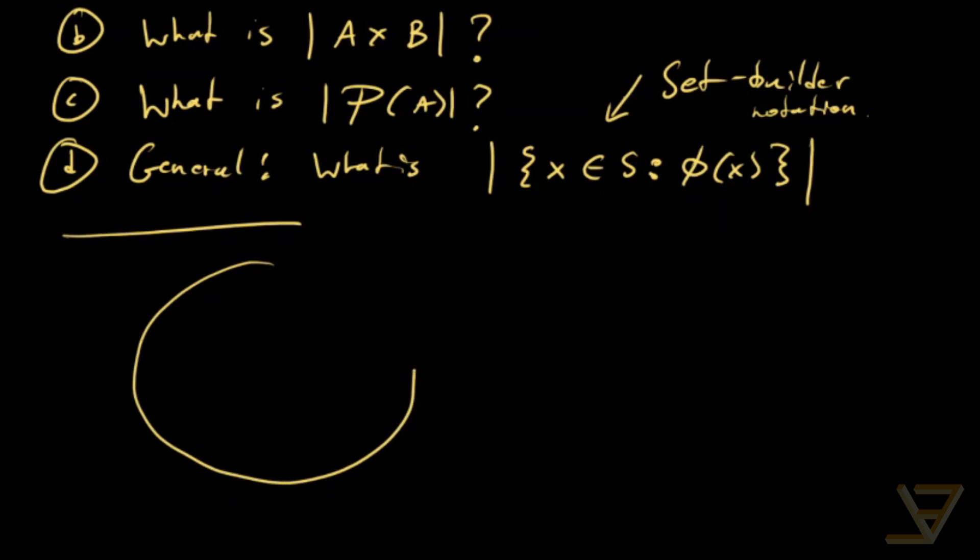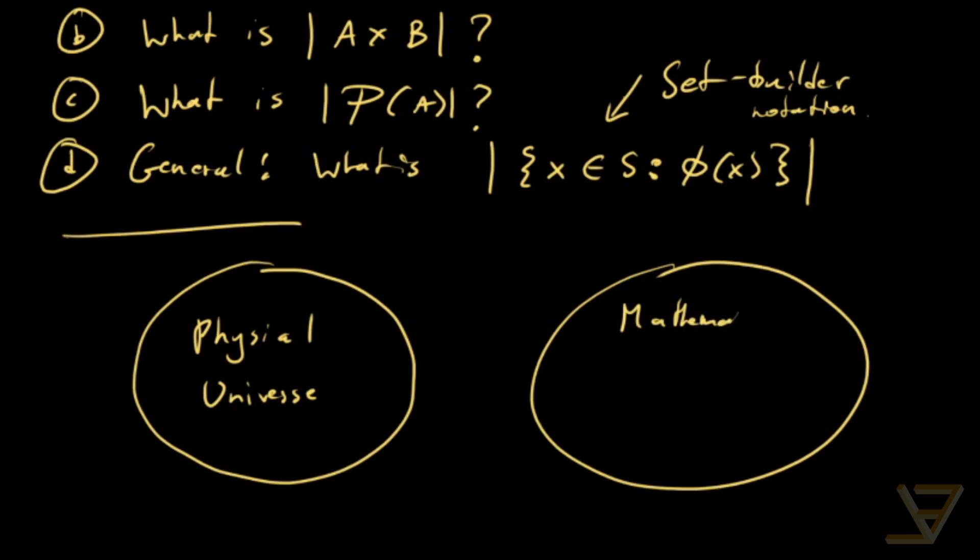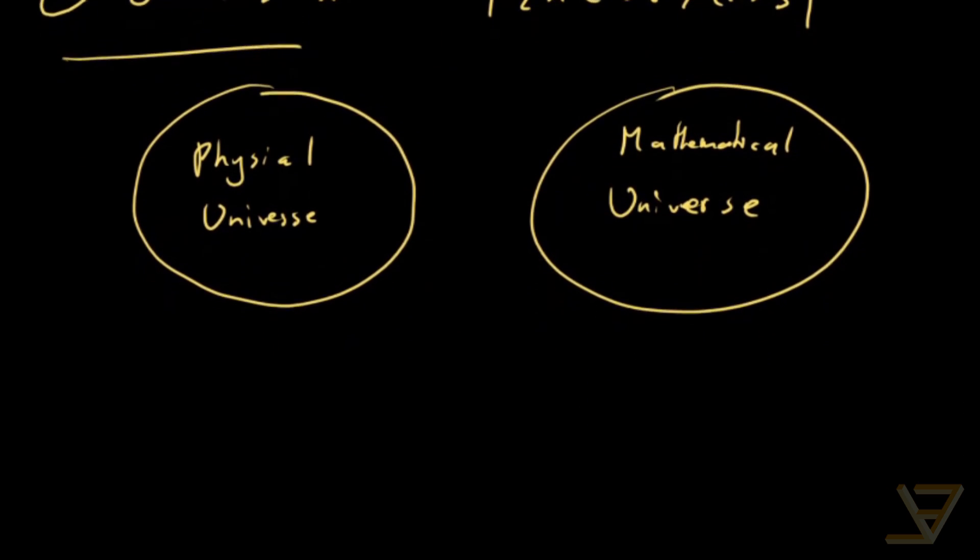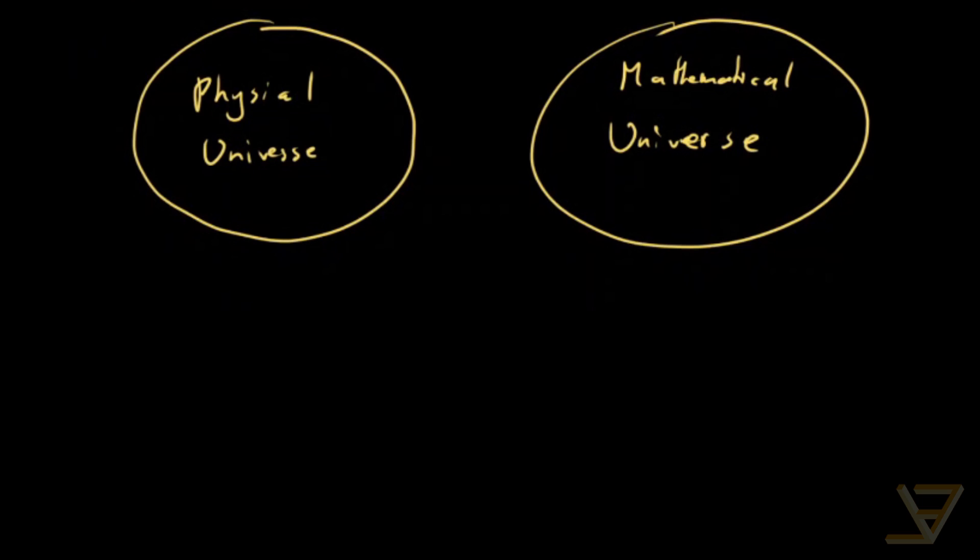So, there are these two kinds of universes. There is the physical universe, and there is the mathematical universe. There's also the mental universe, or at least according to, I believe it's Plato or Aristotle's world of ideas. But that's not as important to us right now.